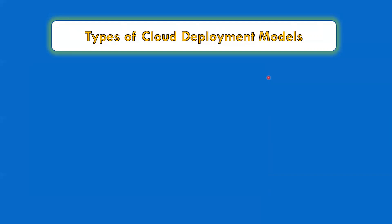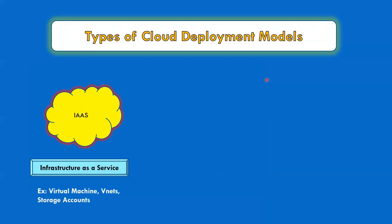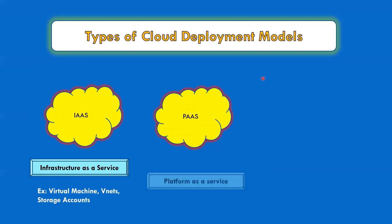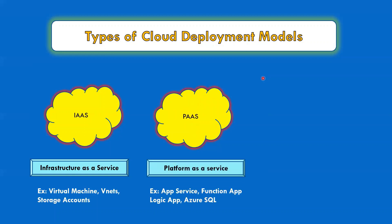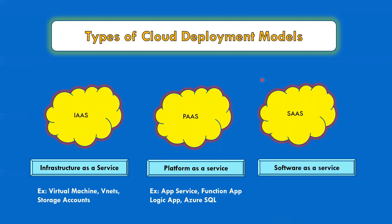If I talk about Azure deployment models, we have three deployment models in Azure. The first is IaaS, which stands for Infrastructure as a Service — examples include virtual machines, VNet, storage accounts, etc. The second is PaaS, Platform as a Service — examples include App Service, Function App, Logic Apps, and Azure SQL. The third is SaaS, Software as a Service — examples include Salesforce, G-Suite, and Office 365. I'll create a detailed video about IaaS, PaaS, and SaaS covering customer and cloud service provider responsibilities.